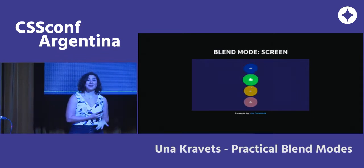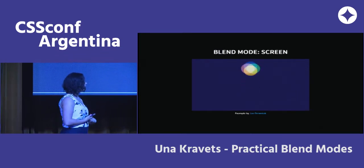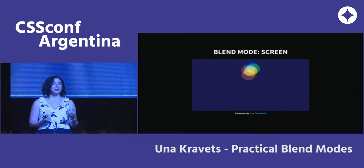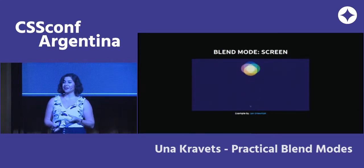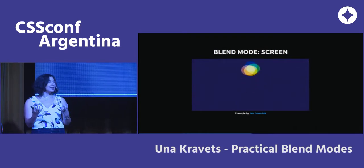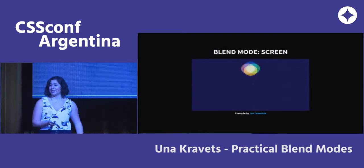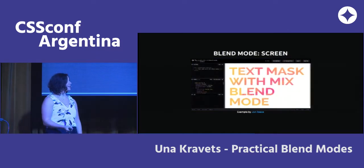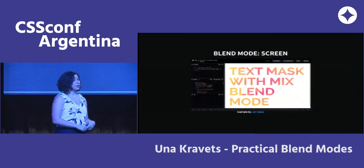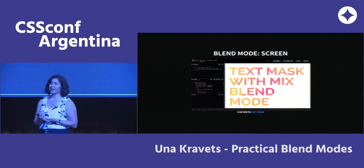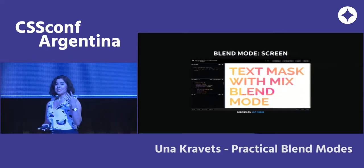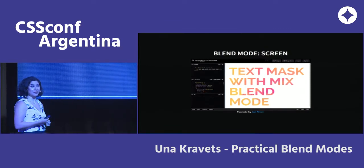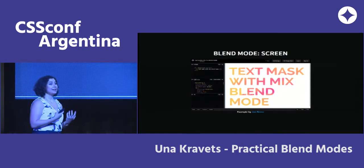A clever screen example I found online by Jan Drunjak: a menu where hovering shows individual icons, but together it's just a cute little circle sitting on your page. You can also create text masks with mix-blend-mode using lighten, darken, multiply, or screen — though background-clip text is a little better supported and more performant.